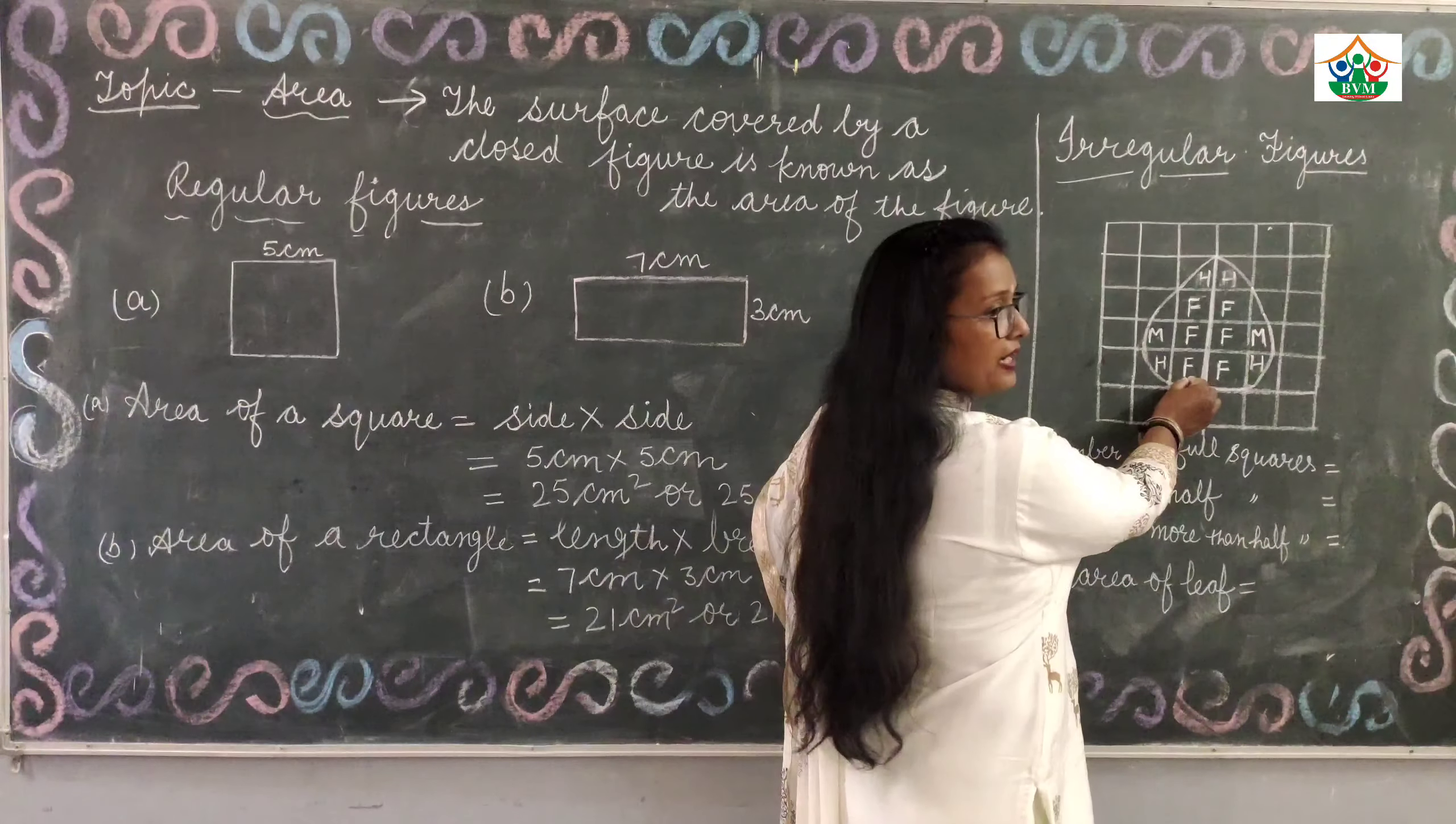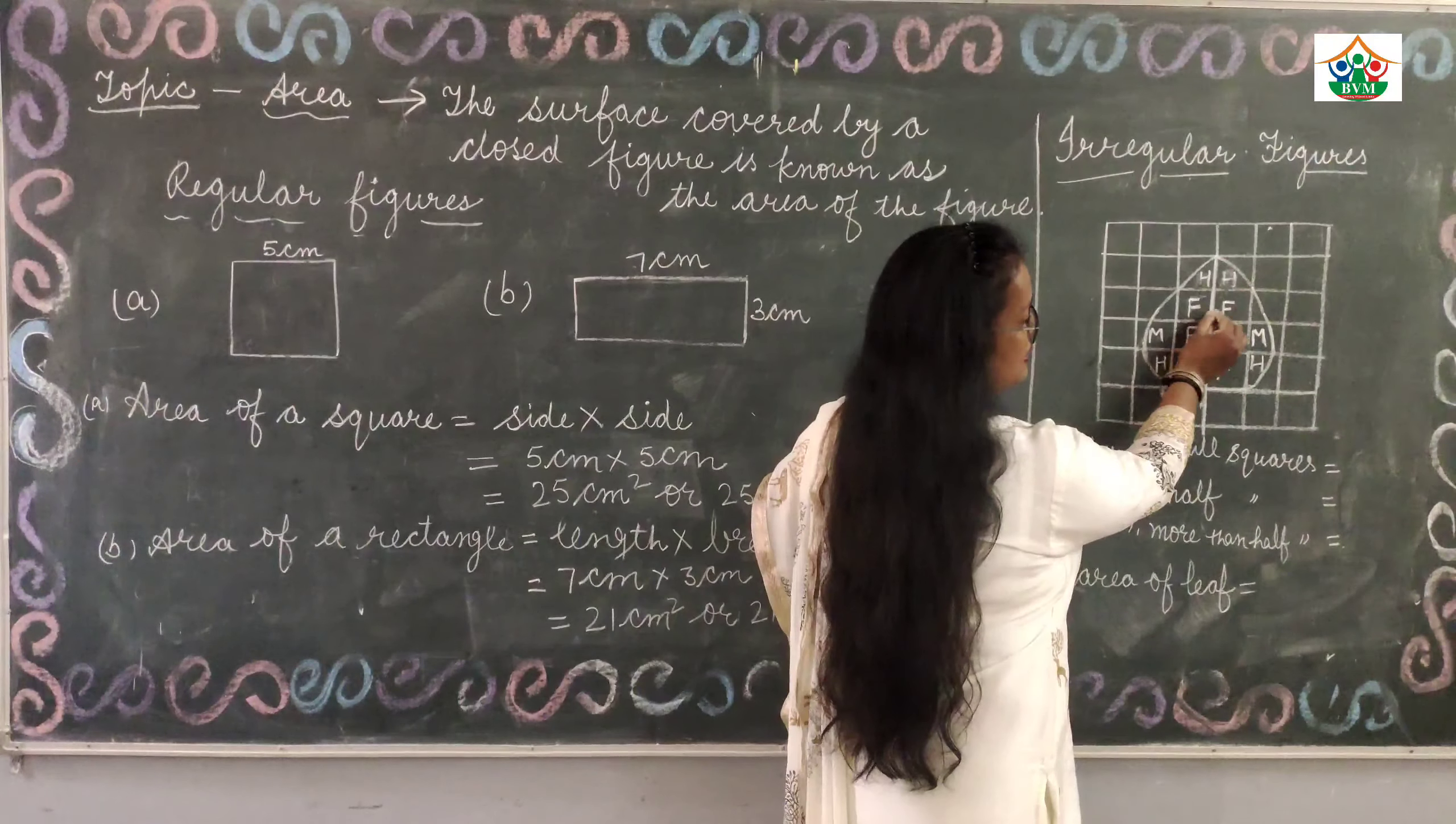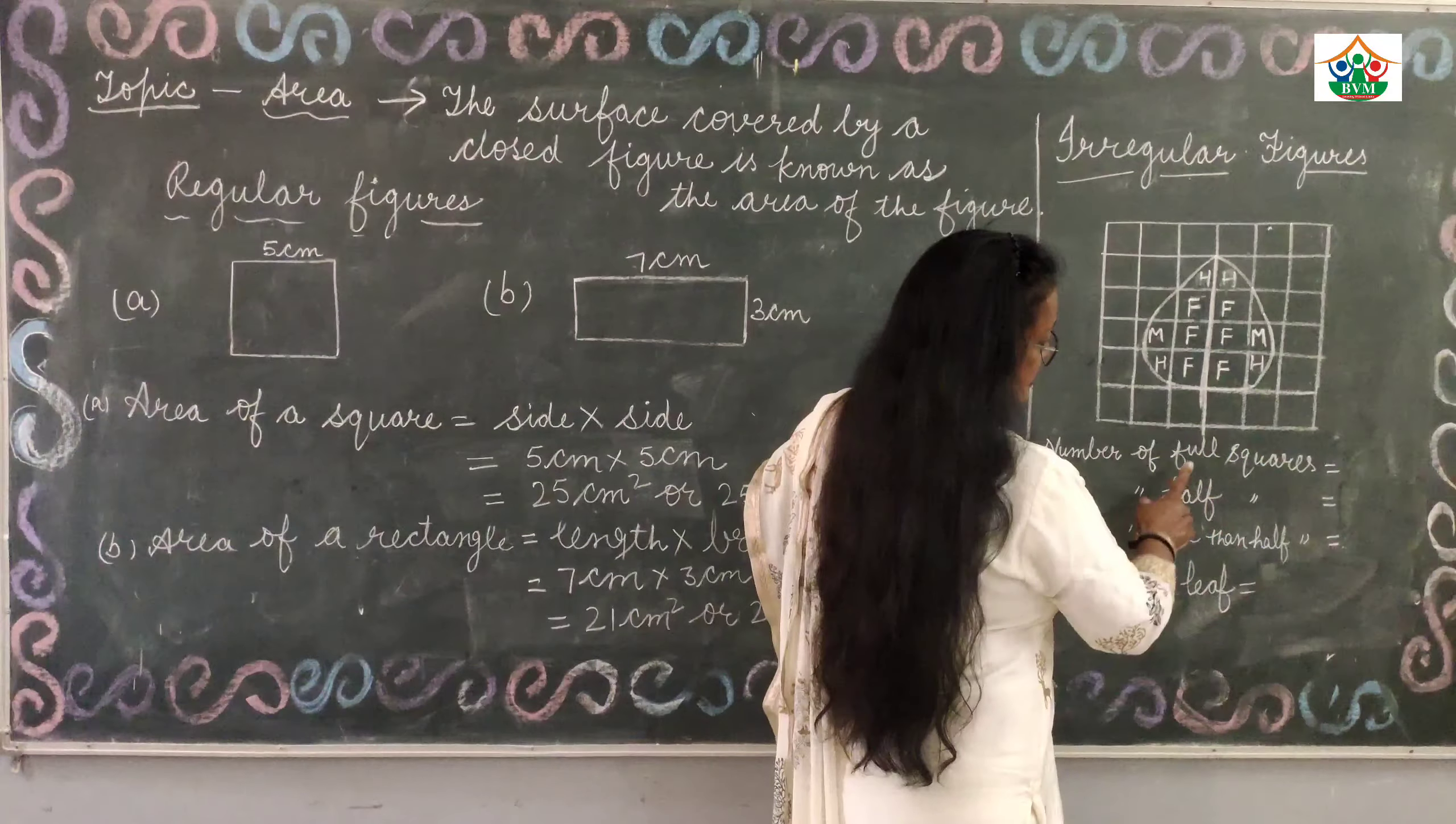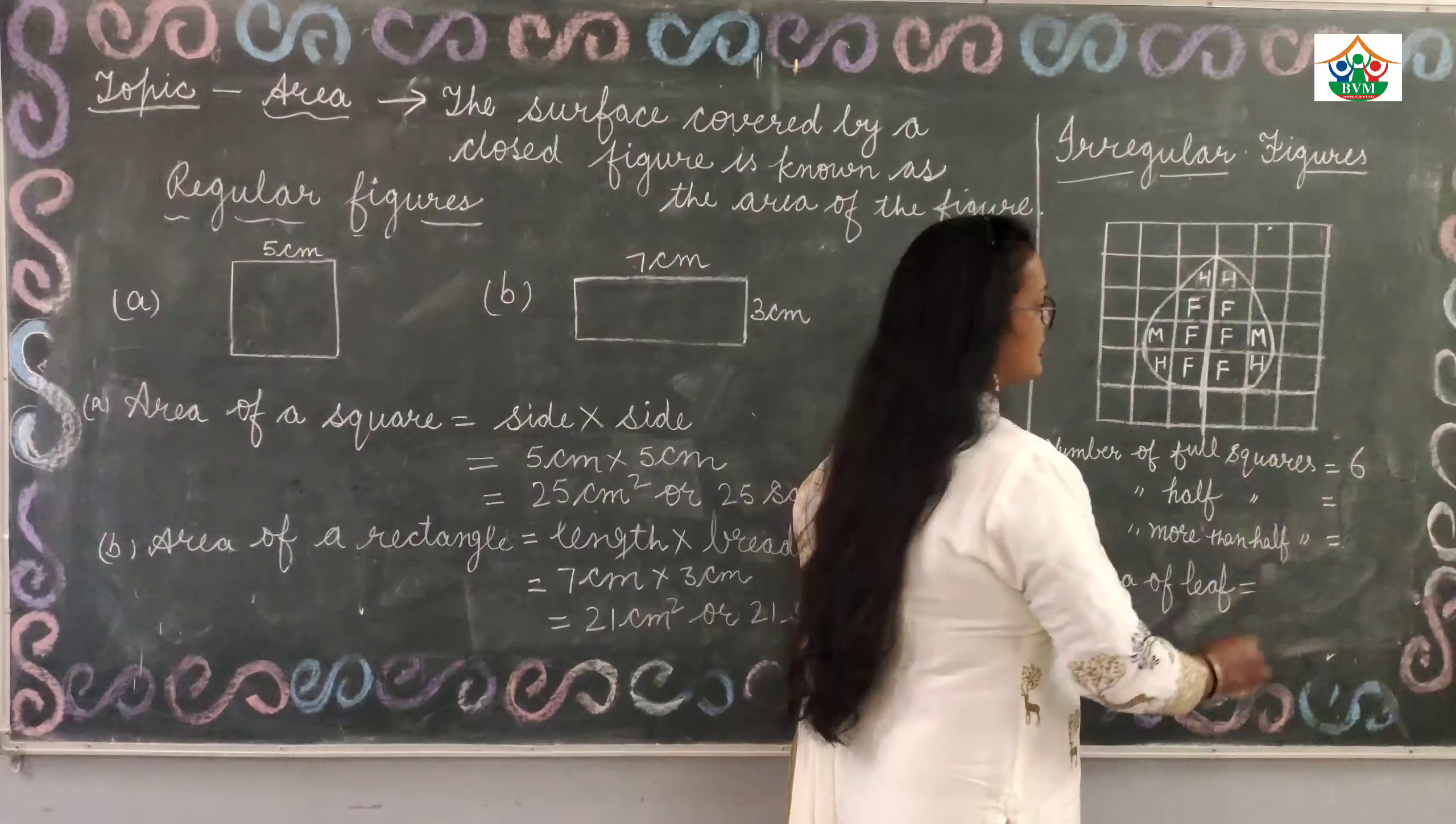Firstly we will check how many full squares are here: 1, 2, 3, 4, 5, 6. Six full squares. Number of full squares is 6.